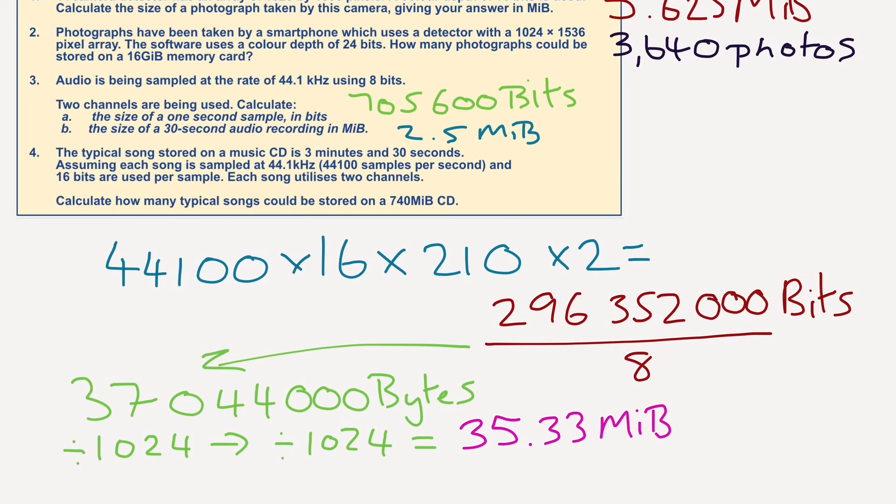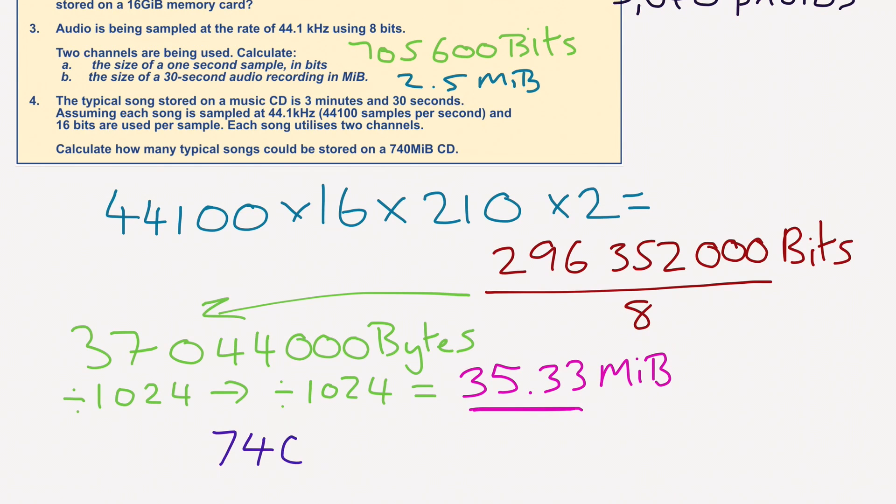So this is for one track - 35.33 megabytes. But what it's saying is how many of these typical songs, based on this size, will fit on a CD that is 740 megabytes? I'm going to divide 740 megabytes divided by 35.33, which gives me 20.94. Well, of course, we can't have 0.94 of a song, so the total would be 20 songs.